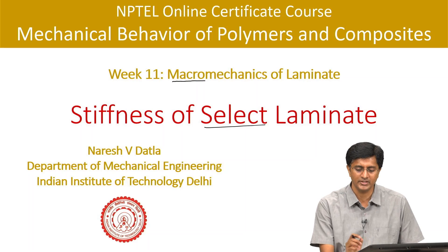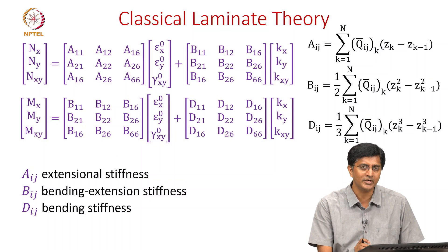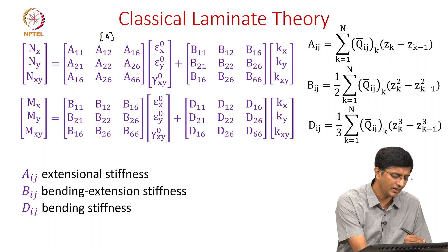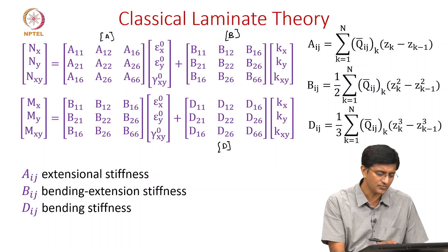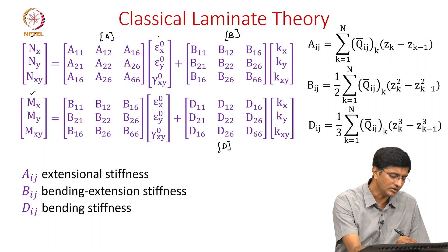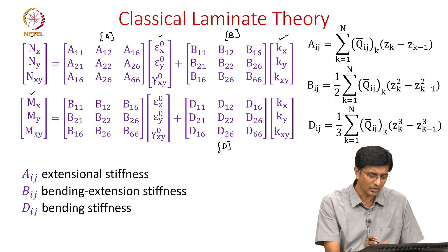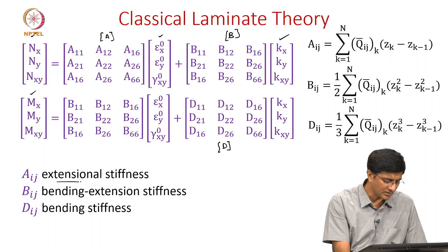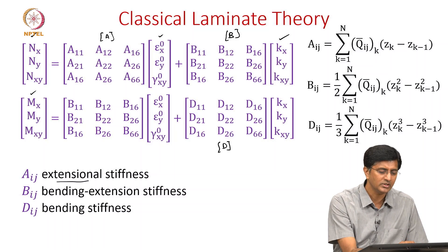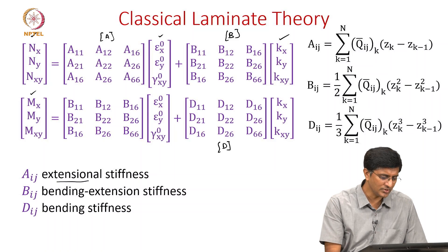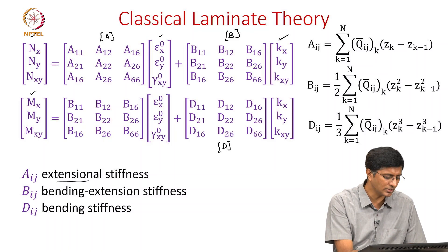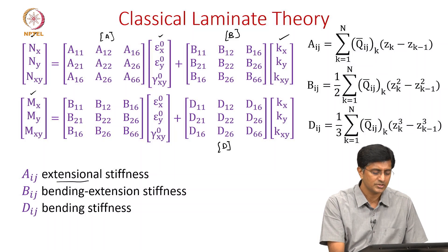Here is a quick review of classical laminate theory. We have introduced three matrices — A, B, and D. Using these three matrices we are able to relate the normal forces as well as the moments with the mid-plane strains and the curvatures.